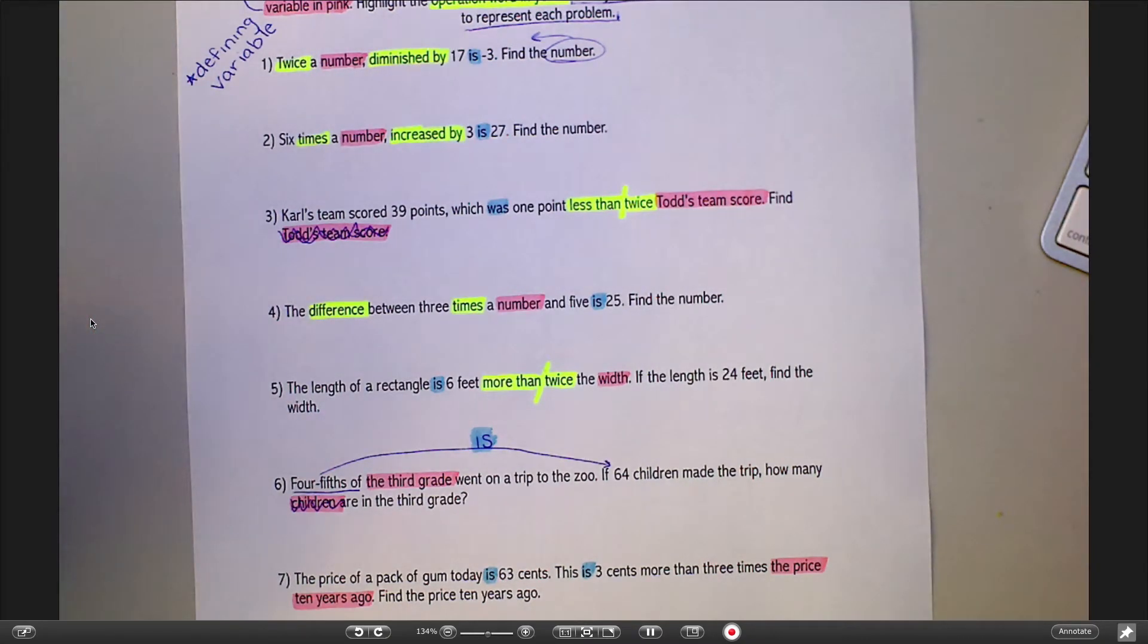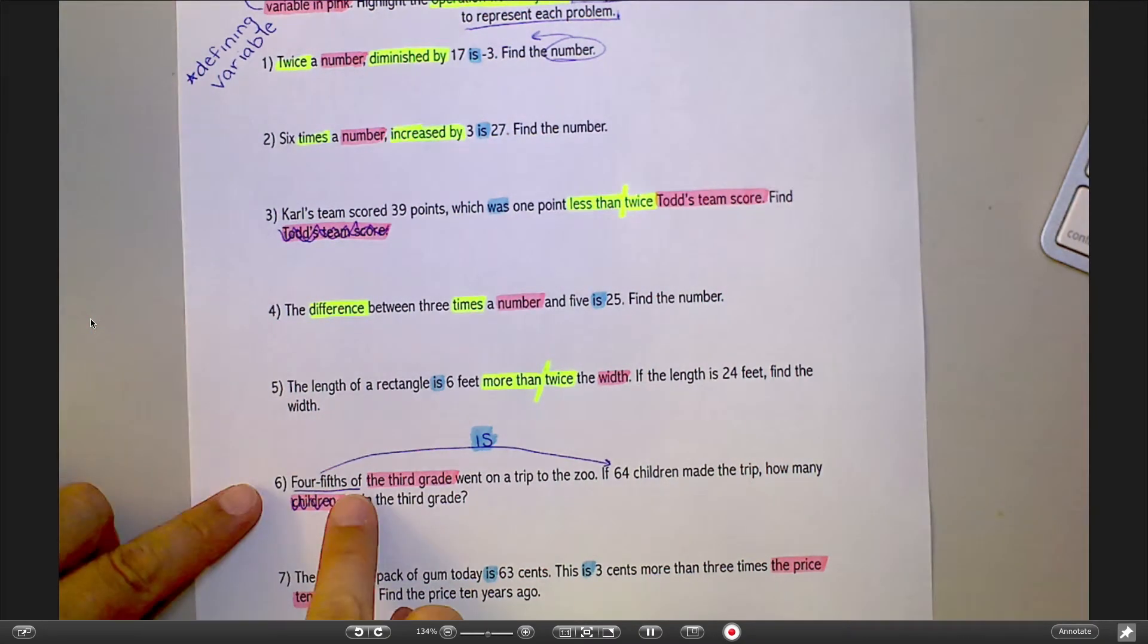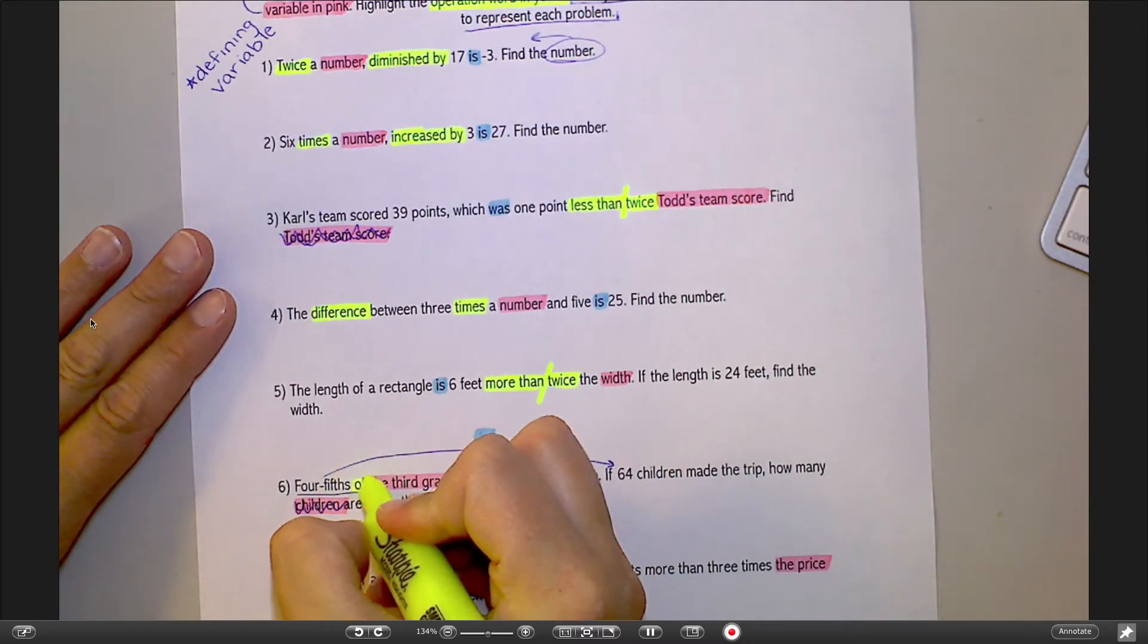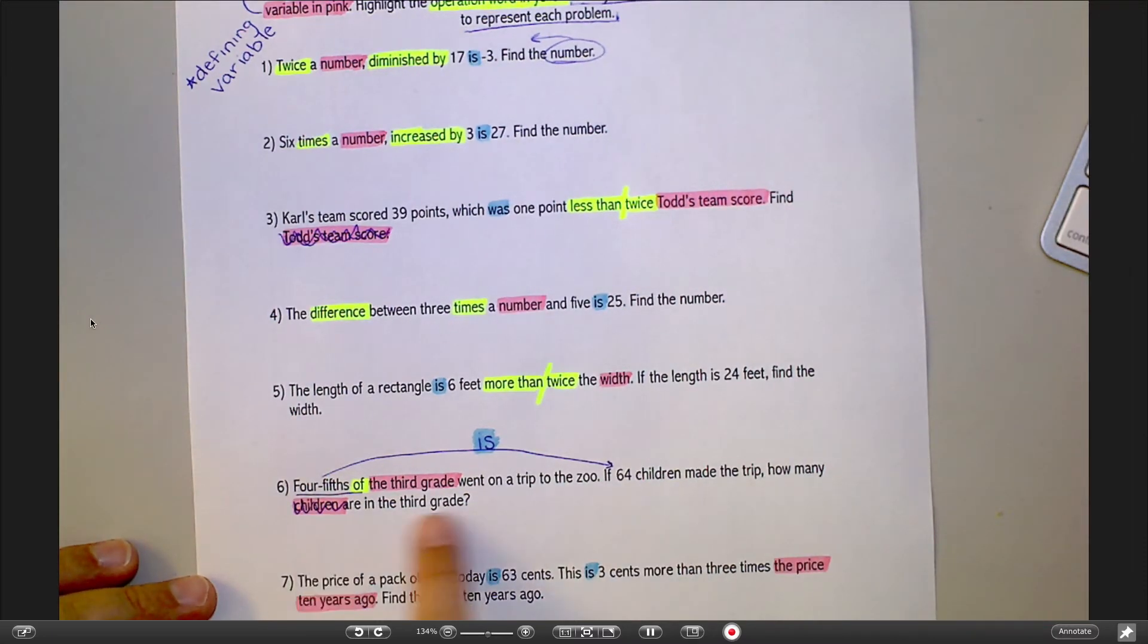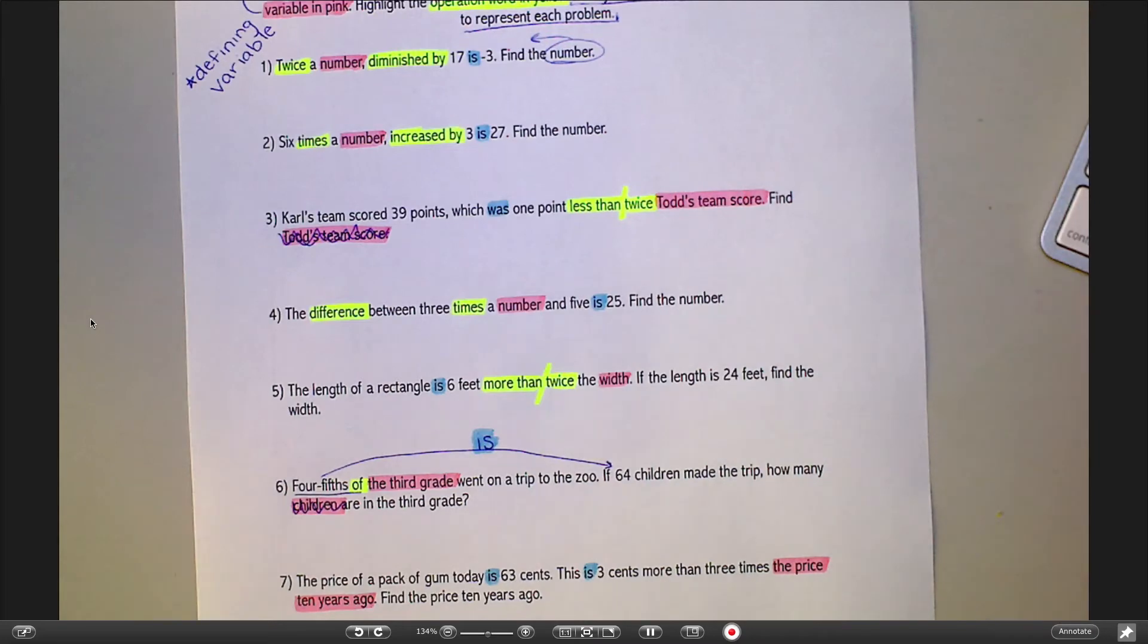Number six, this is tricky. This word of, if you didn't get that on your table with your group, I would recommend somebody go put it on there now. Of means multiplication. But it almost always shows up with a fraction. So if I say one-third of or two-fifths of, that always means to take the fraction and multiply it by something. So of means multiplication. That's an operation word. And that would be hard to find because otherwise there's not really anything else in this problem that is an operation word.